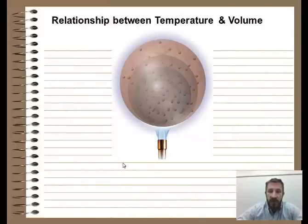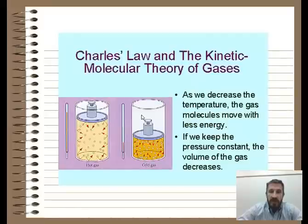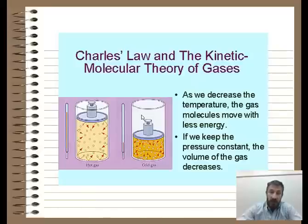We can also see this on a graph showing the relationship between temperature and volume. Instead of a piston, we have a balloon which is elastic and can get bigger. As you add heat, the balloon is able to get bigger and bigger. This is Charles' Law applied to kinetic molecular theory. As we decrease the temperature, gas molecules have less energy. With less energy they collide with less force, and the lower force causes the volume to decrease. So it works in both directions.